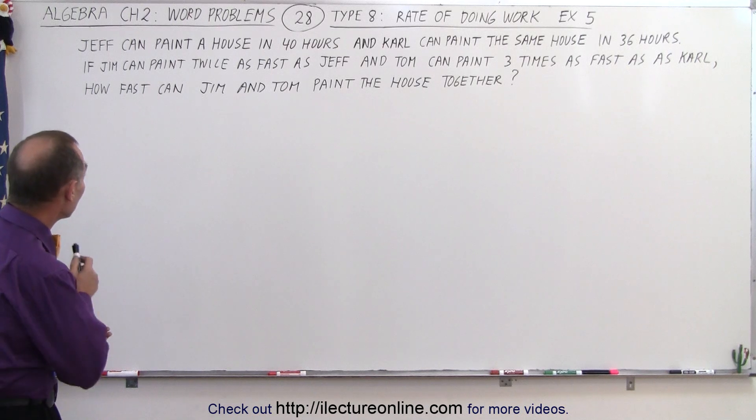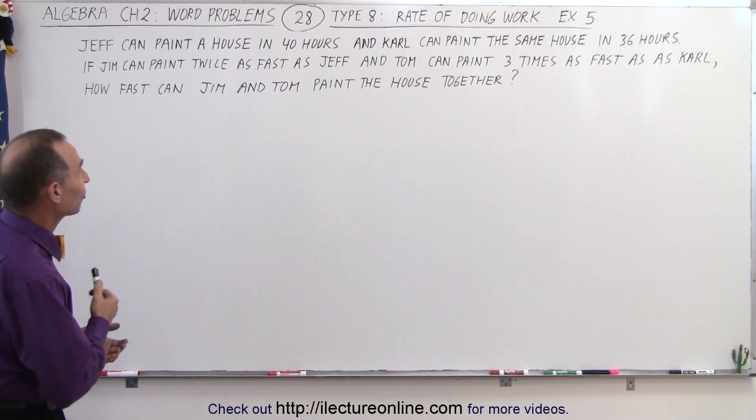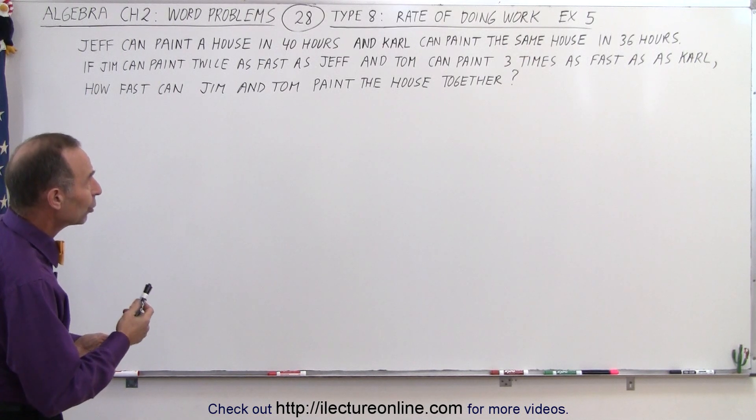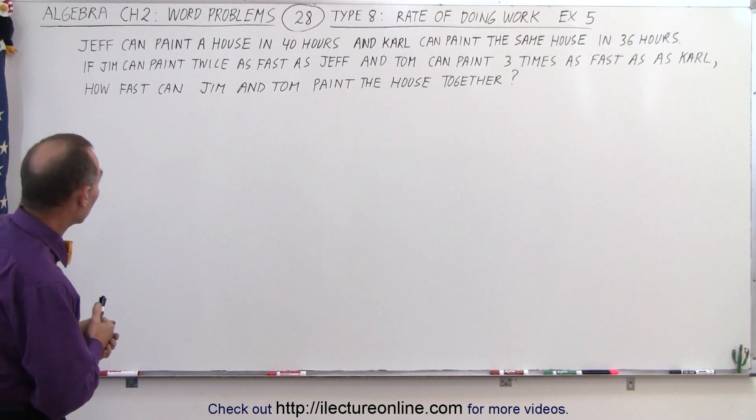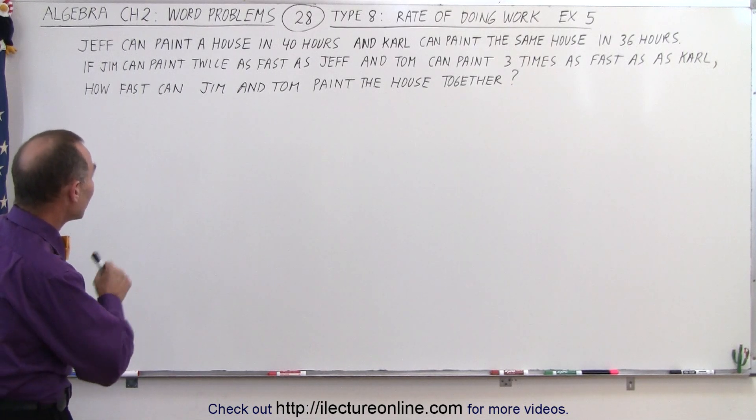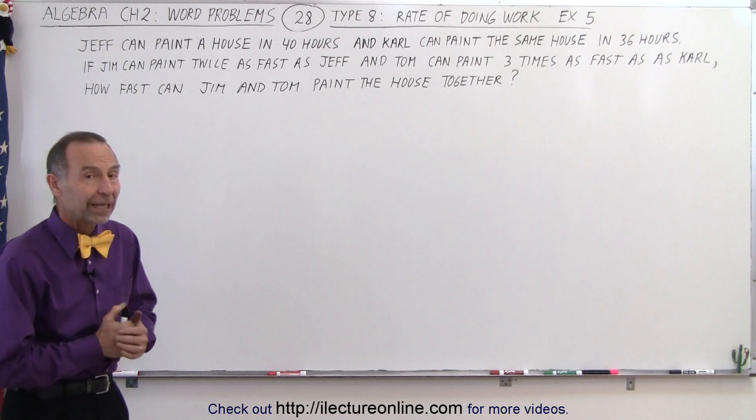But what if we had Jim who can paint twice as fast as Jeff and Tom who can paint three times as fast as Carl. How fast can Jim and Tom paint the house together?